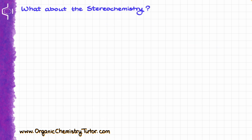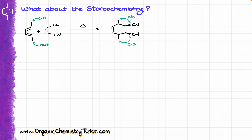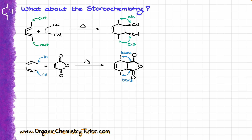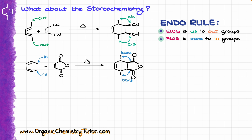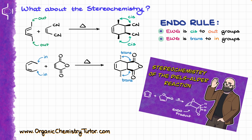Pretty straightforward, right? Now, some of you might argue: what about the stereochemistry of these molecules? We know stereochemistry is a huge part of the Diels-Alder reaction. When it comes to predicting the product, we remember that the out groups must be cis to the electron-withdrawing groups. If we have any in groups, those in groups are going to be trans to my electron-withdrawing groups in my final product — we remember that as the endo rule. This cis-trans trick is basically an easy shortcut for determining the stereochemistry of the Diels-Alder reaction, and I do have a dedicated tutorial on that.